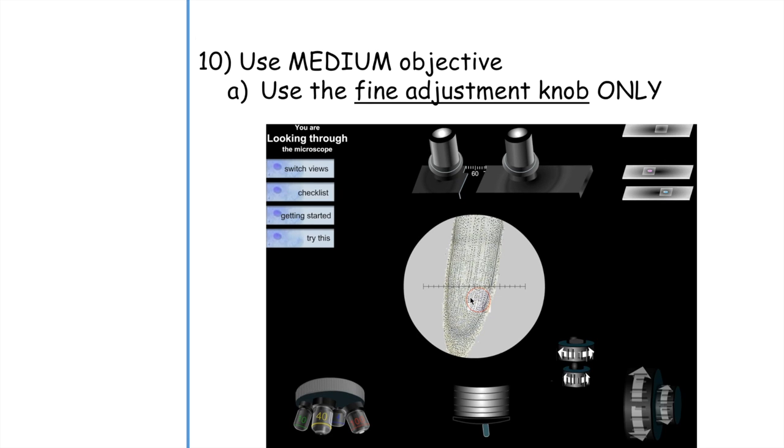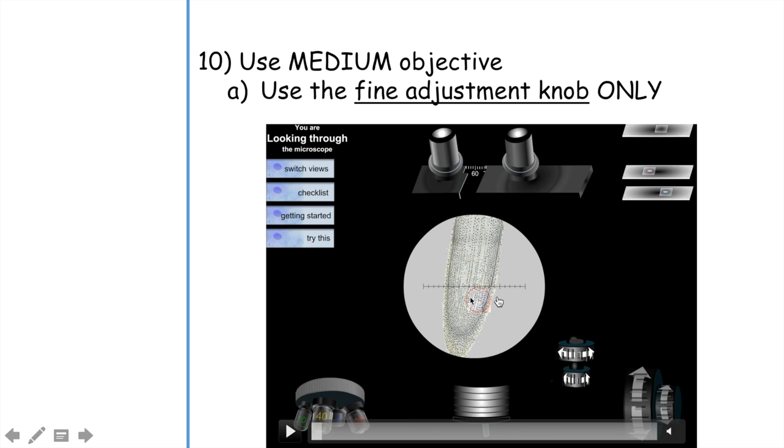The next step is now we want to magnify the specimen even more. Notice that there's this circle right here. This is where we're going to want to focus. We're going to have to move this specimen so that the circle is in the center of this view.